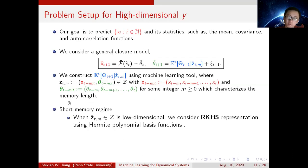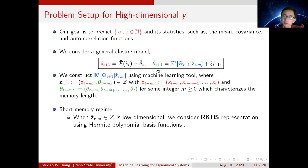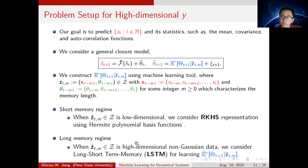There are two regimes. If M is small, that means the short memory regime, then A_TM is low dimensional, so we use the RKHS representation for learning this conditional expectation Epsilon. If A_TM is high dimensional — that means M is large — then we consider using the LSTM network for learning this conditional expectation.